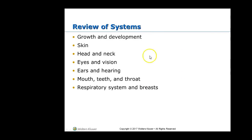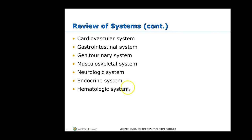Do a thorough review of systems — make sure you hit all your systems. Growth and development is important in kids; you'll assess their developmental level to see if they're on track with Piaget and Erikson. That's an added component you don't usually do with an adult. A full head-to-toe assessment covers skin, head, neck, and respiratory systems. If you're doing a focused assessment, you may not involve every system.